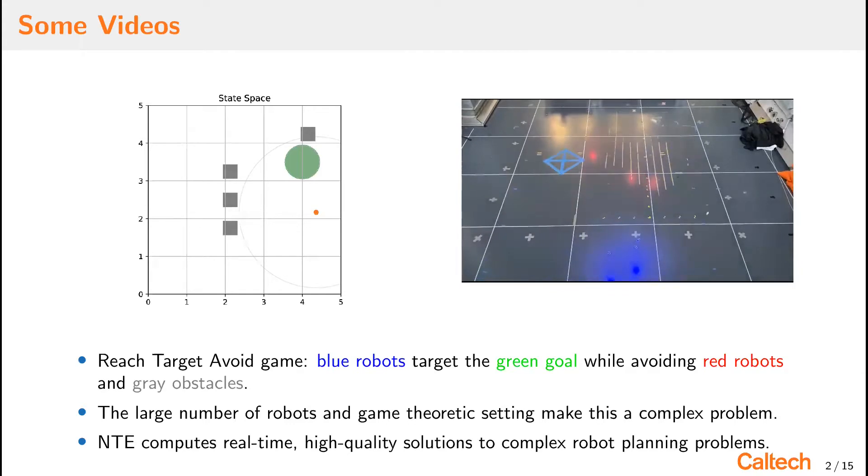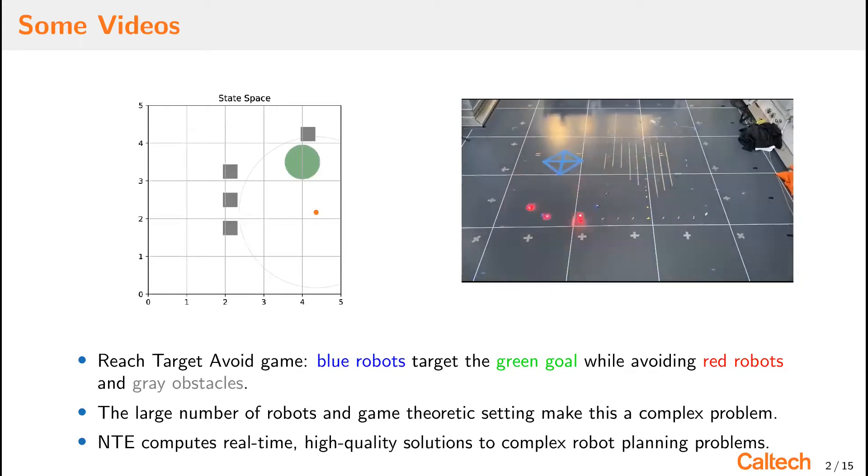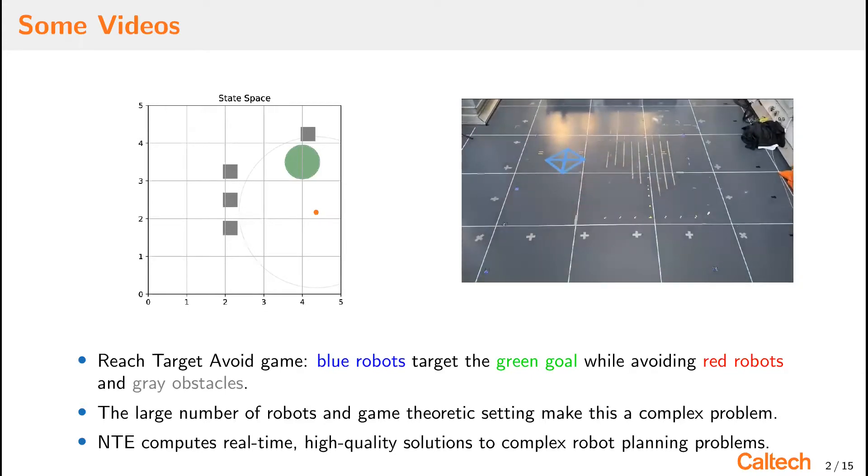Once we have the planner working in a simulated environment, we can quickly transfer to a real robotic system. Here the robots are Crazy Fly quadrotor robots with double integrator dynamics. The point of these videos is to show that NTE finds high-quality solutions to complex robotic planning problems in real-time.